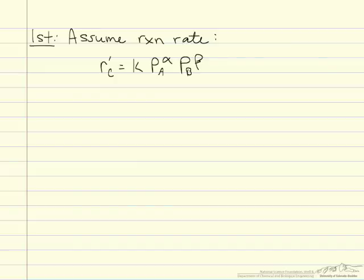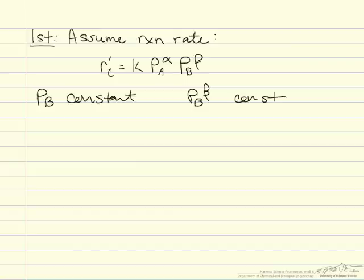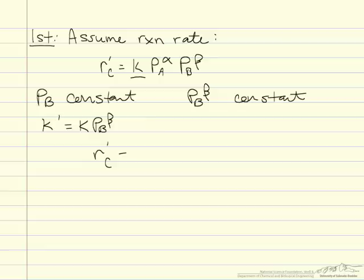We can look at a case specifically to find alpha where the partial pressure of B is being held constant. When P_B is constant, the term P_B to the beta is also constant, so we can lump it into the reaction constant K and define a new constant K prime, equal to K times P_B to the beta. Our rate of appearance of C then becomes K prime times P_A to the alpha.